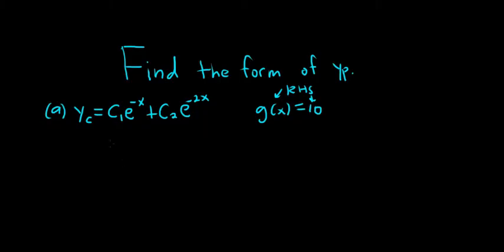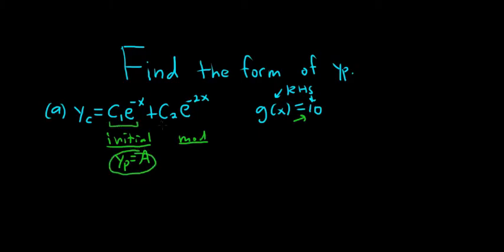How I do it is in steps. First I make an initial guess based only on the right-hand side. Based on the right-hand side, the initial guess is that the solution should have the form of a constant, so Yp equals A. Then I do a modified guess — you look at the initial and the terms of Yc. If there's repetition, you multiply by x. In this case there's no repetition: these are all exponentials, and this is a constant. So the modified guess is equal to A. That's the form of Yp.